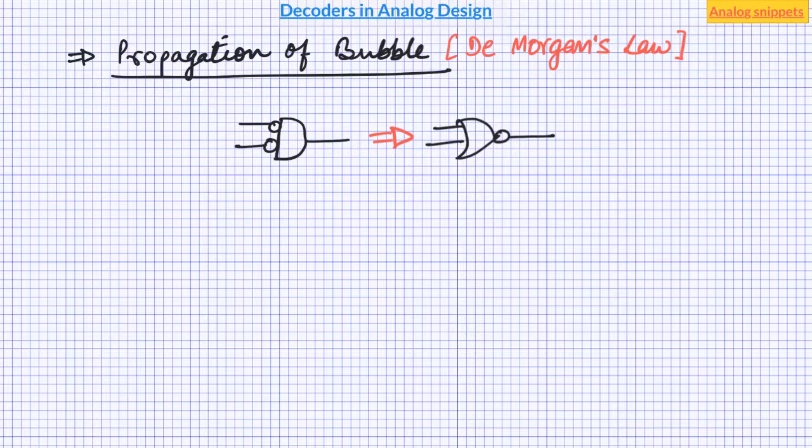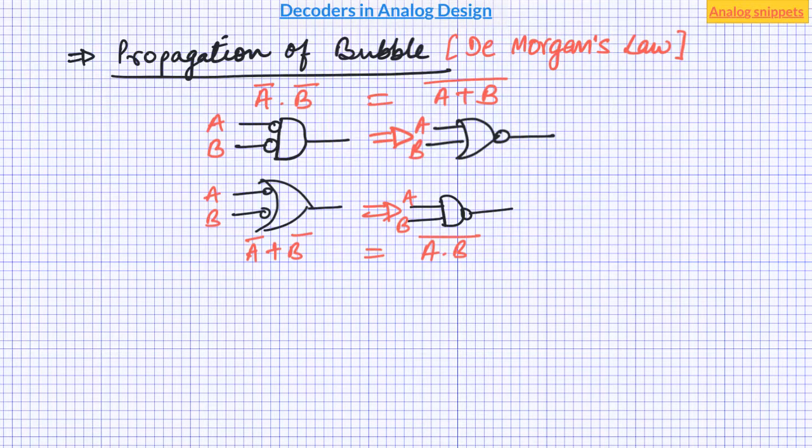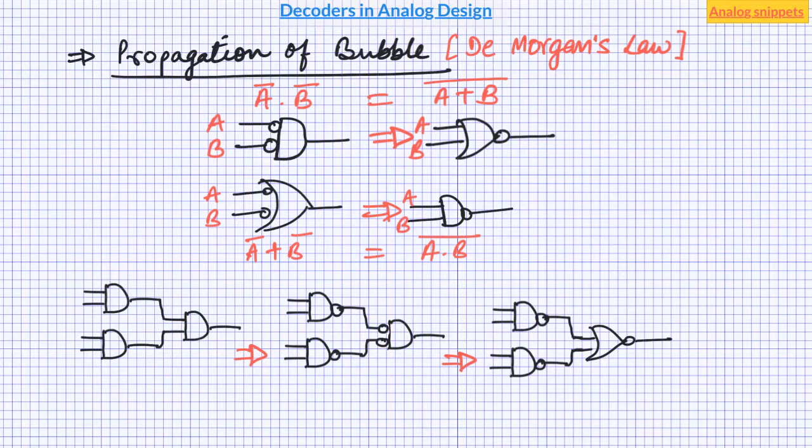The de Morgan's law for this transformation can be given by this equation. There is an equivalent rule for the OR gate. So after applying this rule we get our desired implementation. So usually I design my logic in terms of AND gate and OR gate because it is easier to think and then convert it back to universal gate using these simple rules.